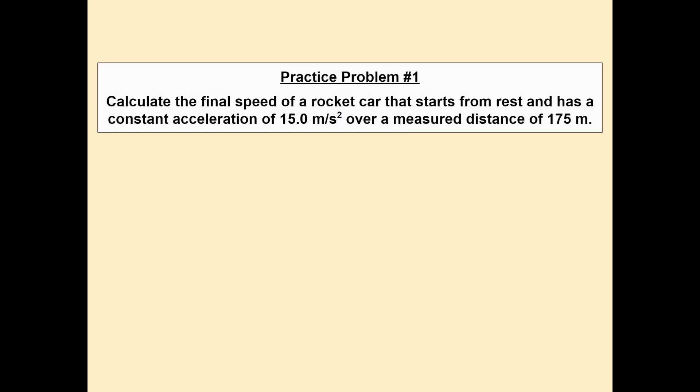So, what's it going to look like when you use kinematic equations in order to solve problems? Here's an example of what those problems will look like. Practice problem number one: Calculate the final speed of a rocket car that starts from rest and has a constant acceleration of 15 meters per second squared over a measured distance of 175 meters. So, the first thing you can notice in this problem is that they use the word acceleration. As soon as you see that word, that's an indication that you can use one of the four kinematic equations to solve this problem, because kinematic equations are good for acceleration.